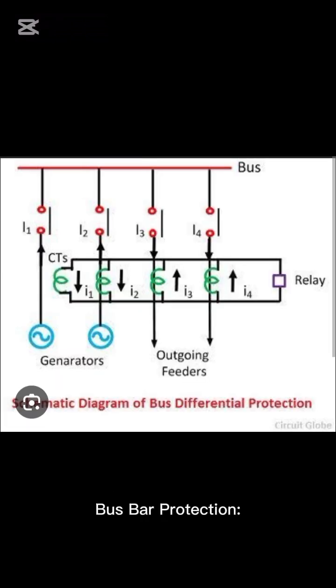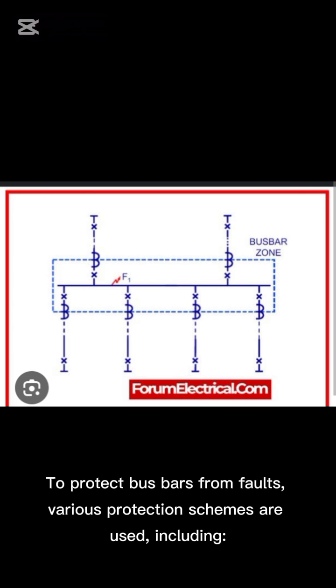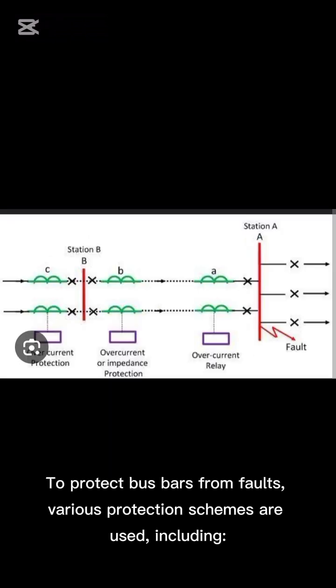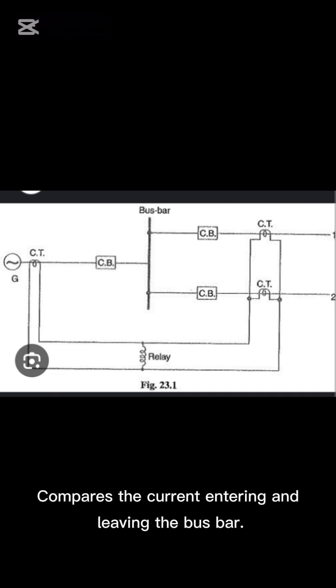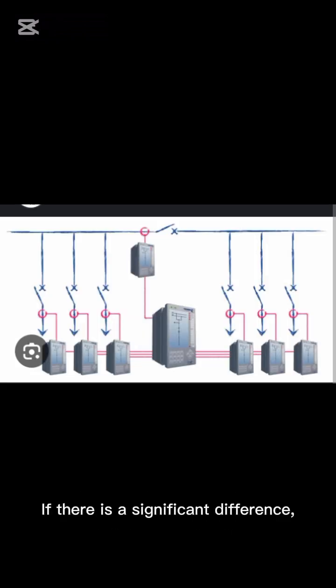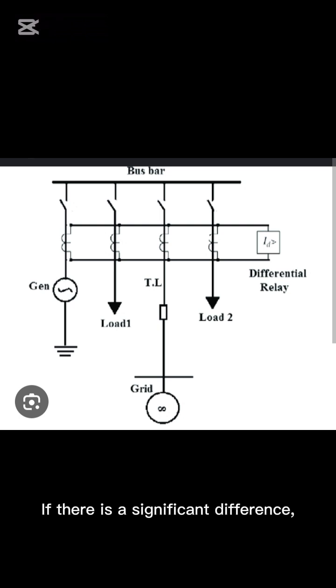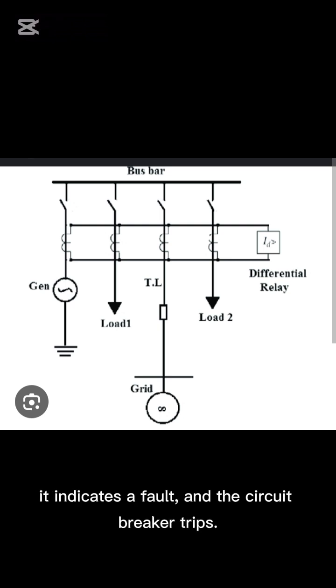Bus bar protection. To protect bus bars from faults, various protection schemes are used, including differential protection. This compares the current entering and leaving the bus bar. If there is a significant difference, it indicates a fault and the circuit breaker trips.